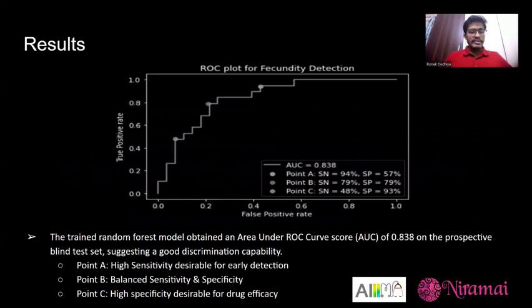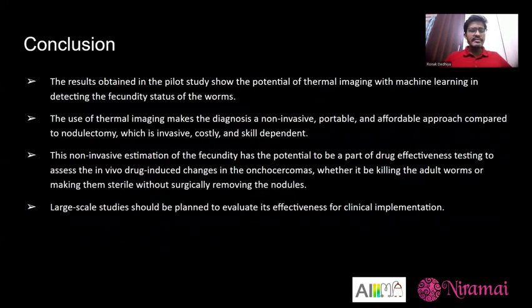The model achieves an AUC of 0.838 on the test set, showing very good discrimination capability. We identify three operating points: Operating Point A with high sensitivity, desirable for early detection; Operating Point B with balanced sensitivity and specificity; and Operating Point C with high specificity, desirable for drug efficacy assessment. From these results, we can see the potential of thermal imaging with machine learning in detecting the fecundity status of the worm. This tool also offers non-invasive, portable, affordable, and instantaneous reporting compared to other modalities.